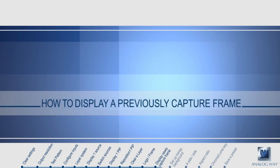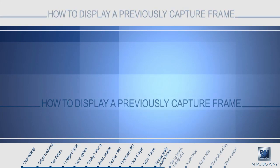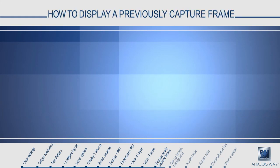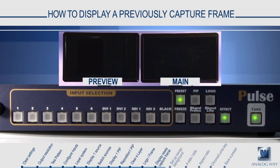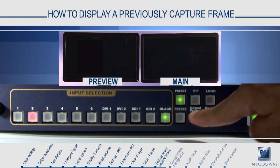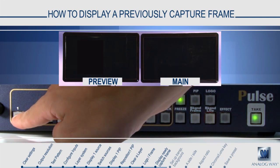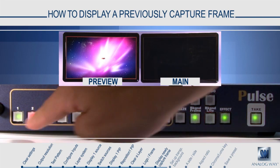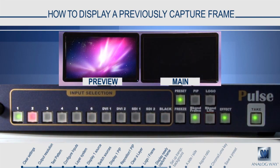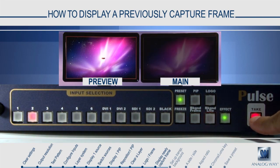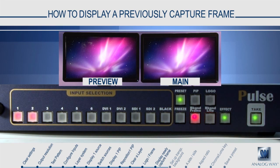How to display a previously captured frame. To display a previously captured frame, first select the background frame layer, then choose the number corresponding to the frame slot where you saved your frame. You will see the frame appear on your preview. Press take to have the frame appear on the main. Please note that video layers will block your view, so be sure to clear these layers before displaying a frame.